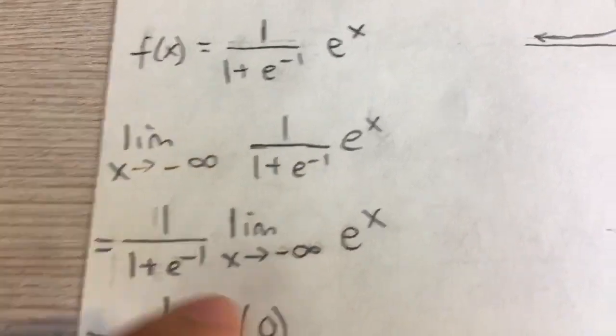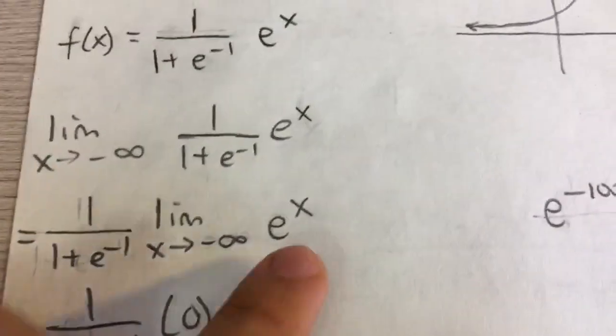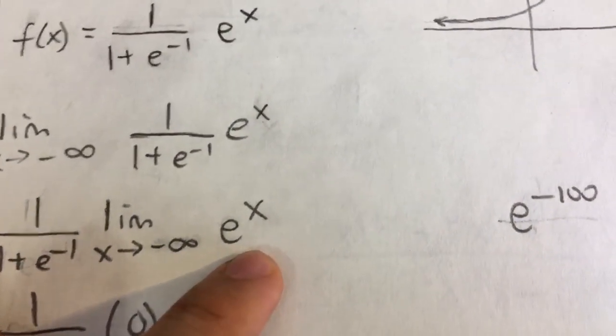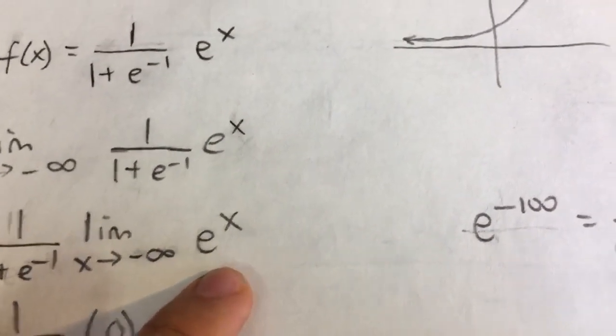Because this is just a constant, we can bring the constant out in the front, and we know that e to the x, as it approaches negative infinity, like say we plug in a very large negative value, it would approach 0.